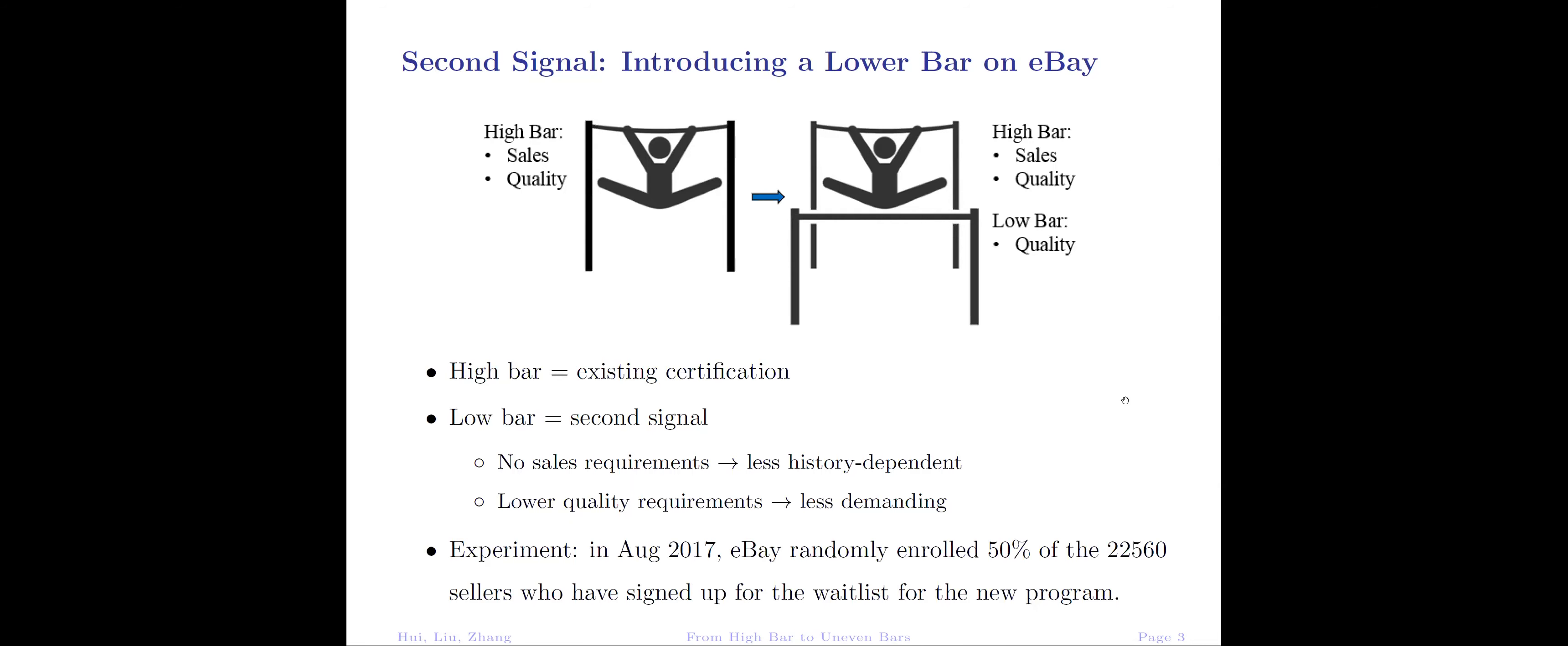To evaluate the policy effect, we use an experiment that eBay conducted in August 2017, when eBay randomly enrolled half of the sellers who had signed up for the waitlist of the new program. Essentially, sellers in both treatment and control groups wanted to enroll in the program, but only the treatment group got in.